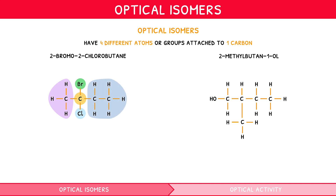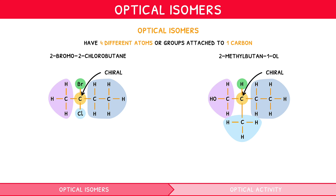Meanwhile, in 2-methylbutane-1-ol, the second carbon is also the only atom with four different groups attached: hydrogen, CH2OH, CH3, and C2H5. We therefore term each of these carbons a chiral carbon, and their overall molecules are thus considered chiral.